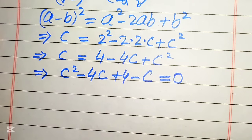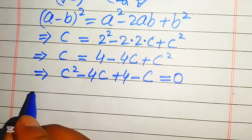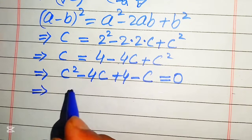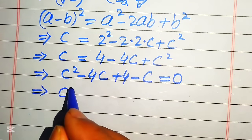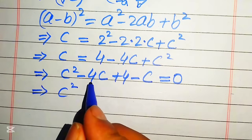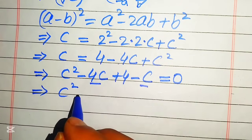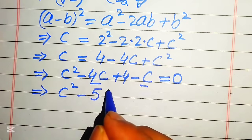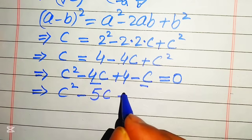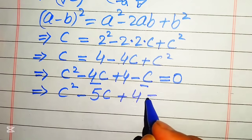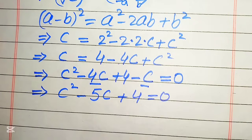In the next step we add or subtract the like terms. We have c squared, and negative 4c minus c becomes negative 5c, plus 4 equals 0.